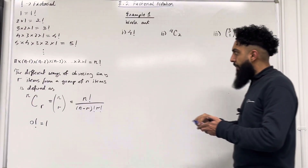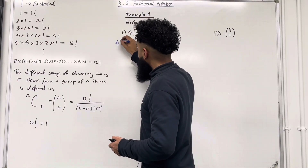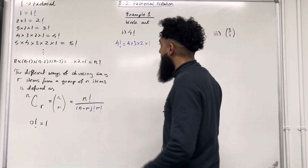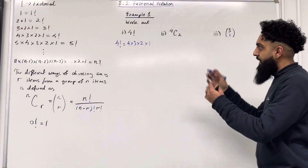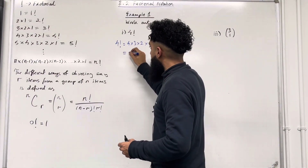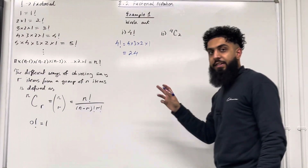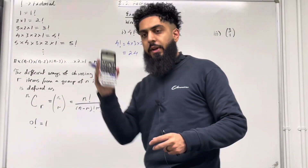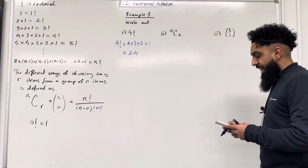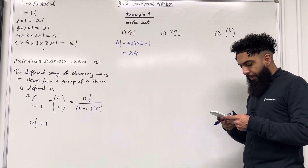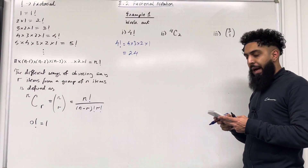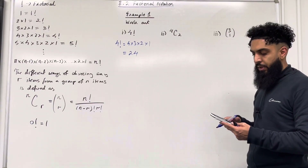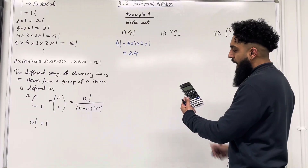Let's have a look at part 1. 4 factorial is equal to 4 times 3 times 2 times 1 by definition, and this is just 24. You can calculate this directly from your calculator. Here is my calculator — type in 4, then press shift and x to the power minus 1 to get the factorial symbol. Once you press equal, you get 24.